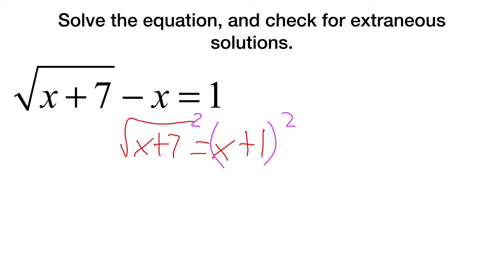Now this is where I see a lot of people make a mistake because they think they can just say x squared plus 1 squared. But remember, we have to foil out x plus 1, which ends up getting us x plus 7 equals x squared. And then it's going to be times x plus x plus x. So that will be plus 2x and then plus 1.